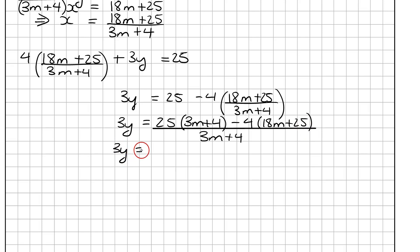So we'll just multiply out the top. So we get 75m plus 100 minus 72m minus 100. And this is all over 3m plus 4.